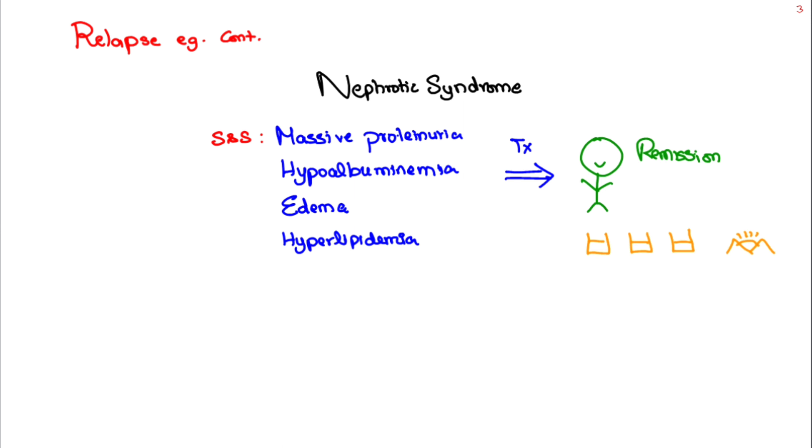The patient goes for relapse, which is often triggered by minor infections, which is defined here as urine albumin 3 plus or 4 plus for three consecutive early morning samples, having been in remission previously.